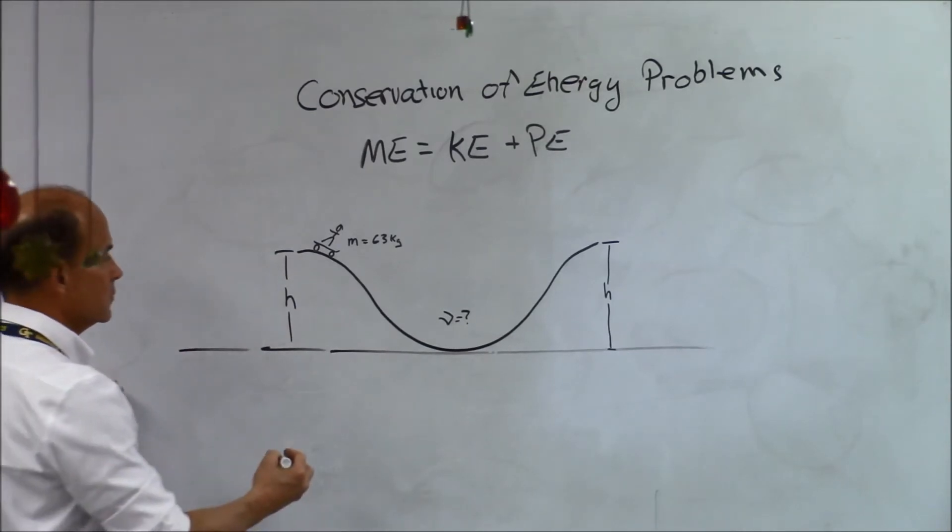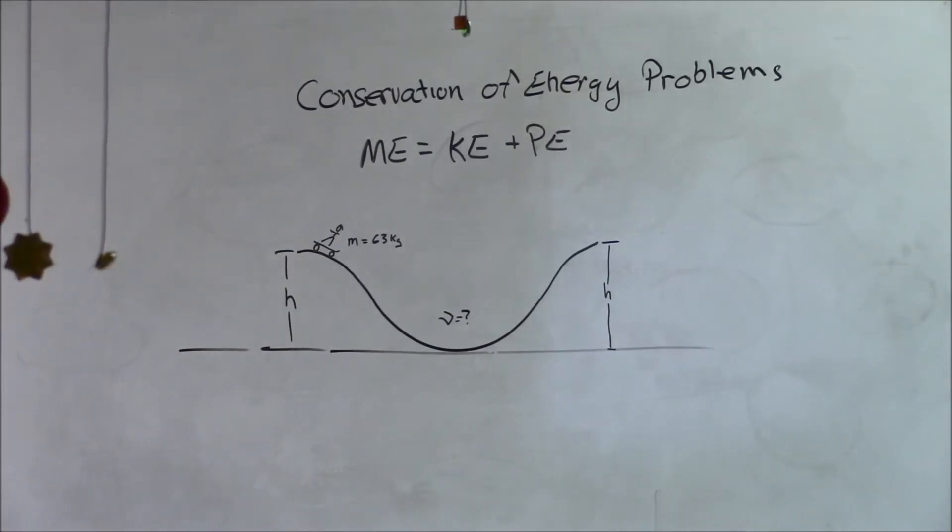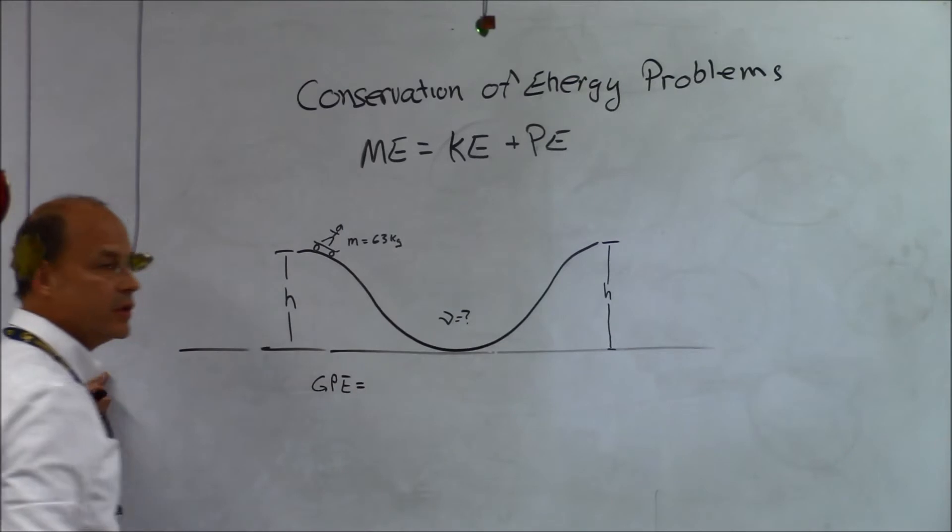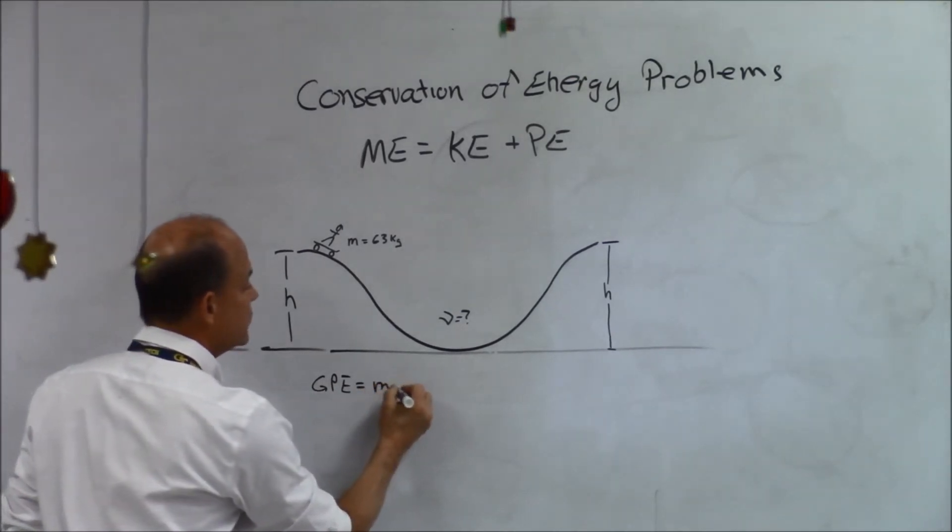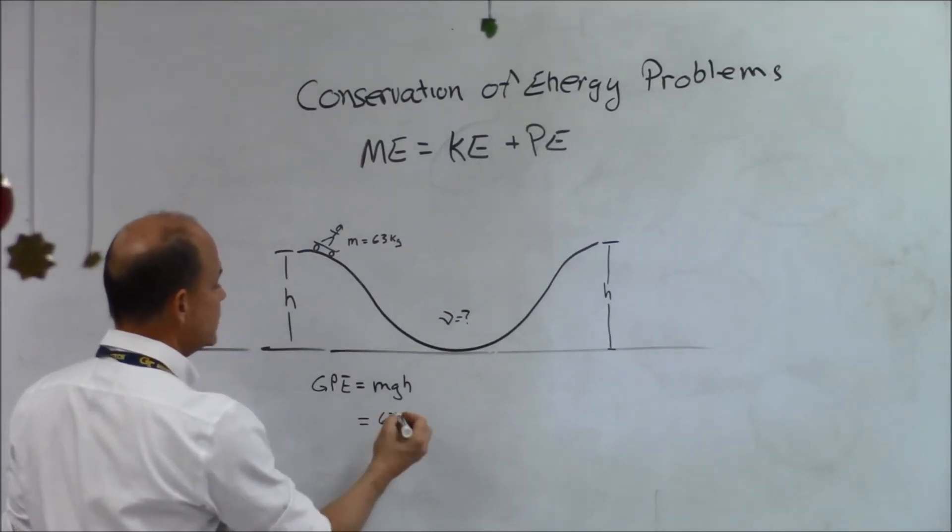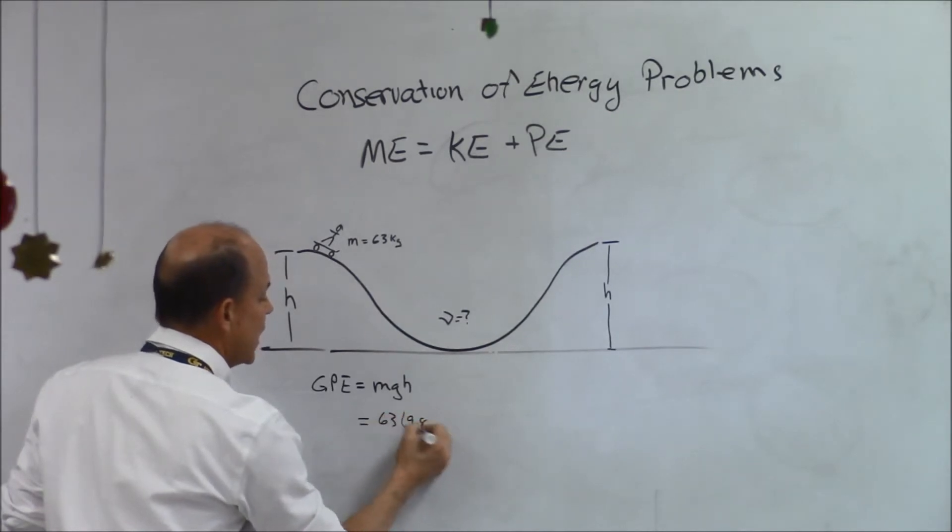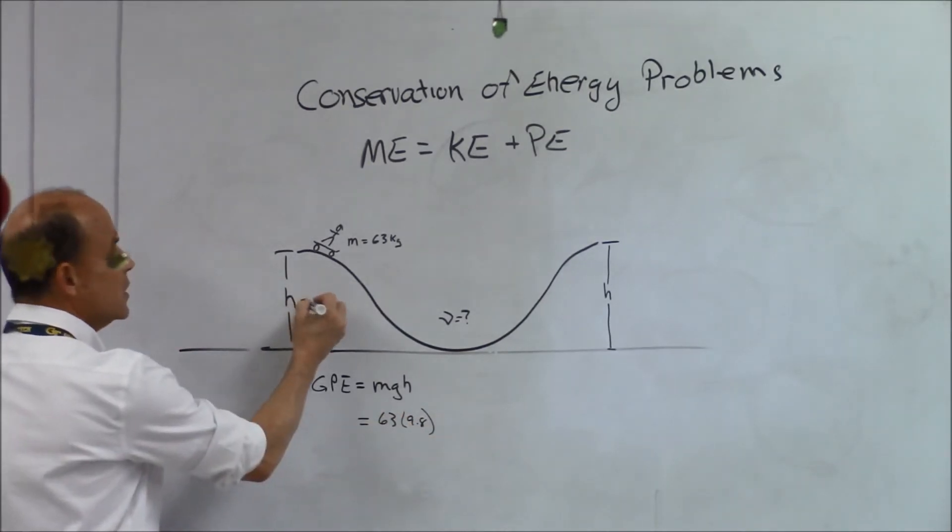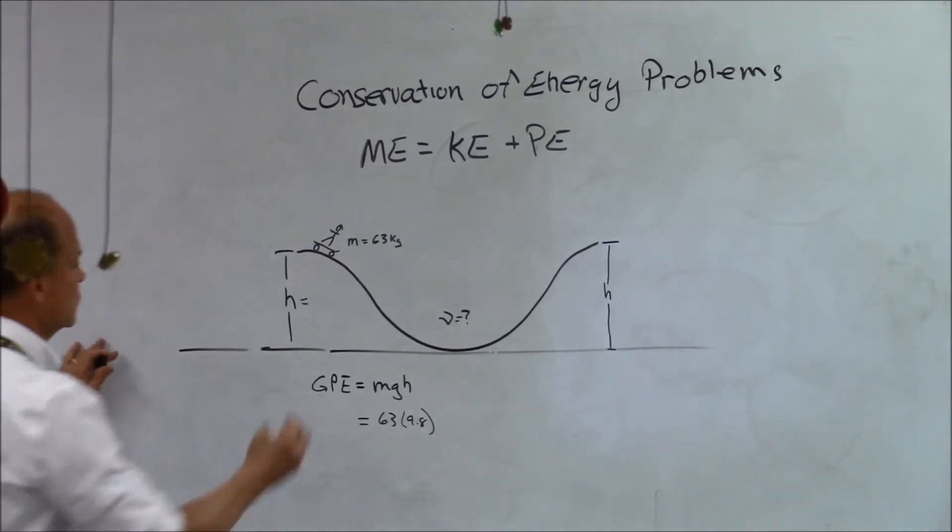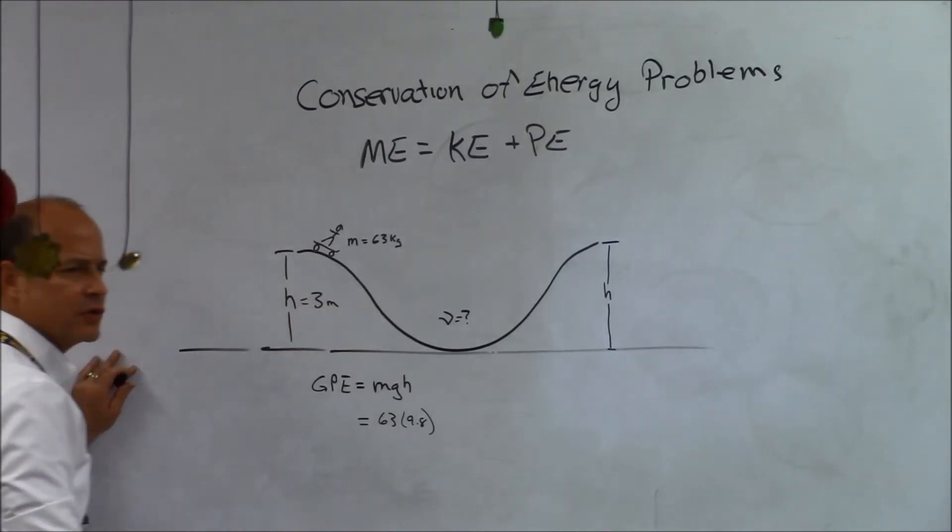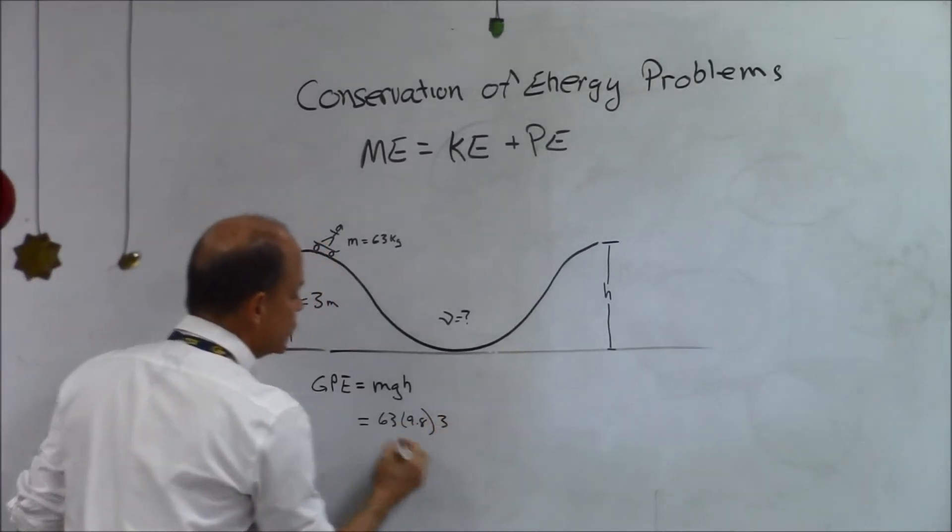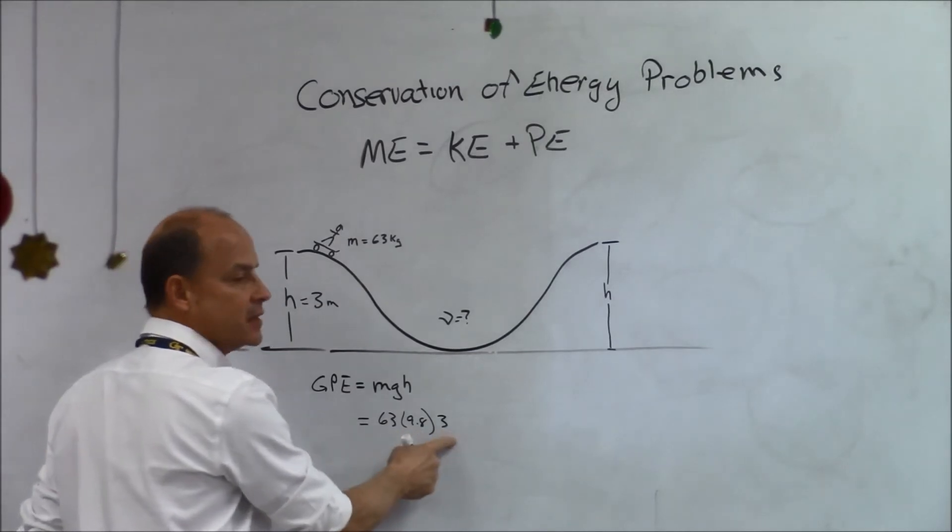Before he starts to move, what kind of energy does he have? Gravitational potential energy. How much? Do we know how much? MGH is the equation. Do we know his mass? Yes. Do we know the acceleration of gravity? Yes. And do we know his height? Ooh, not yet. All right. So typically, you're in a skateboard park, 10 feet, 3 meters high. Say he's on a half pipe. A half pipe has a side wall of 3 meters high.